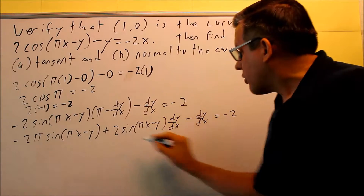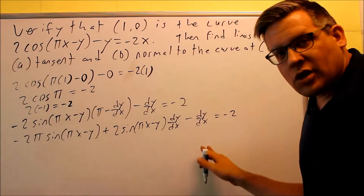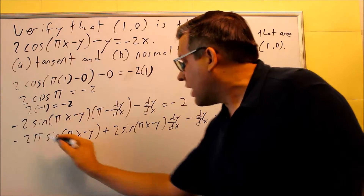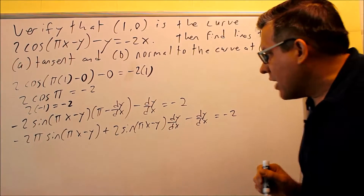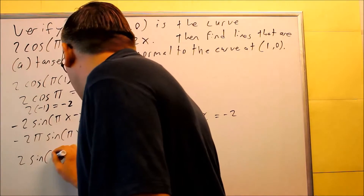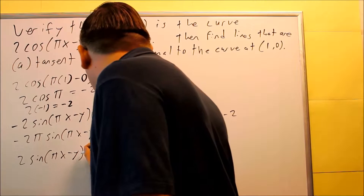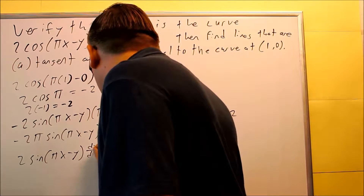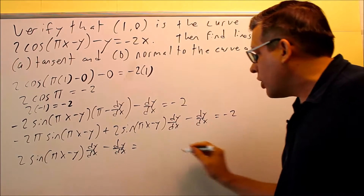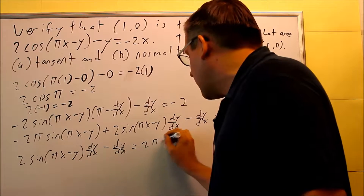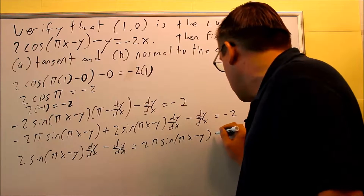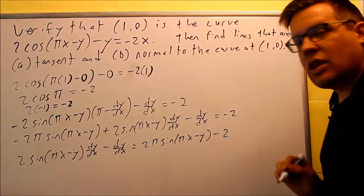You want to leave all the terms that have dy/dx on one side of the equation, so we're going to leave these two there, and move the other term to the other side. So we're going to have 2 sine of (pi x minus y) times dy/dx minus dy/dx on one side, and on the other side 2 pi sine of (pi x minus y) minus 2.